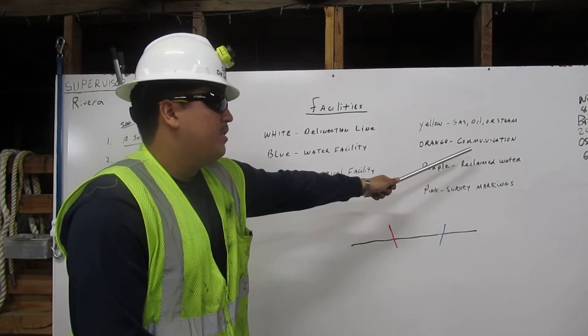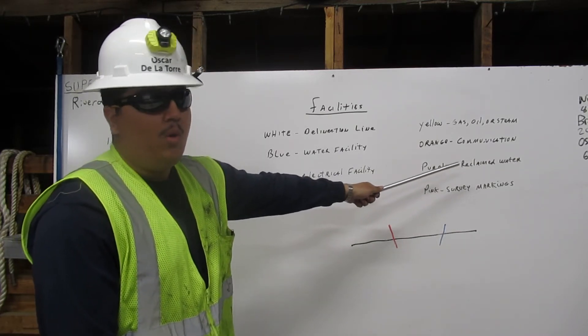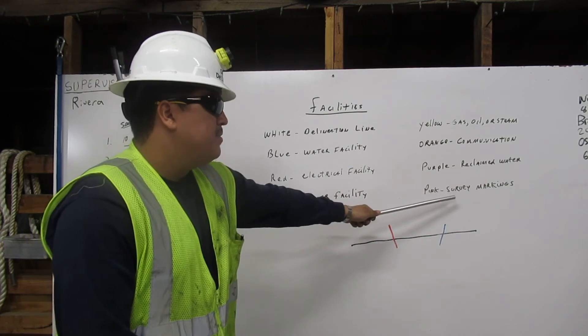Orange represents communication. Purple represents reclaimed water. And pink represents the survey markings.